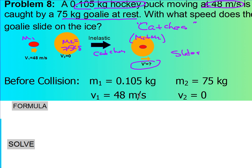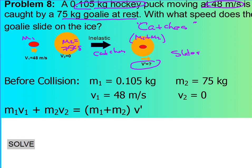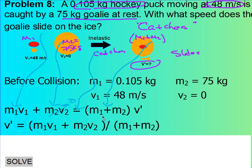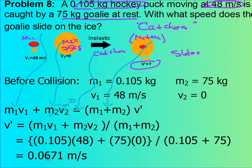Read off your momentum formula: M1 times V1 plus M2 times V2 equals M1 plus M2 times V final. This term — M2 times V2 — is zero, so you can mark it out. Rearranging for V final, divide both sides by M1 plus M2 and solve. The goalie with the puck travels off at 0.67 meters per second.